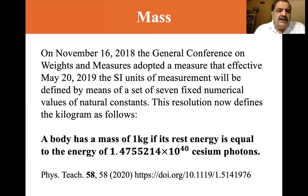On November 16th, 2018, the General Conference on Weights and Measures adopted a measure that effective May 20th, 2019, the SI units of measurement will be defined by means of a set of seven fixed numerical values of natural constants. This resolution now defines the kilogram as follows: a body has a mass of one kilogram if its rest energy is equal to the energy of 1.4755214 times 10^40 cesium photons.